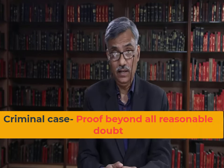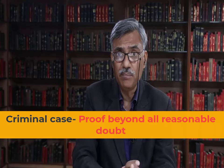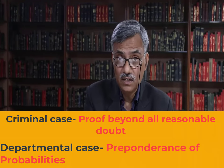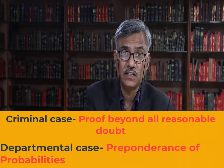The second important principle is the standard of proof, or the level of proof. The yardstick and standard of proof in a criminal case is different from disciplinary proceedings. While the standard of proof in a criminal case is proof beyond all reasonable doubt, the proof in a departmental proceeding is preponderance of probabilities. Thus, the level of proof required to prove a charge in a disciplinary matter is much lesser compared to a criminal charge. In the important case of M. Siddique versus Suresh Das in the year 2020, the Constitution Bench of the Supreme Court described what is preponderance of probability.